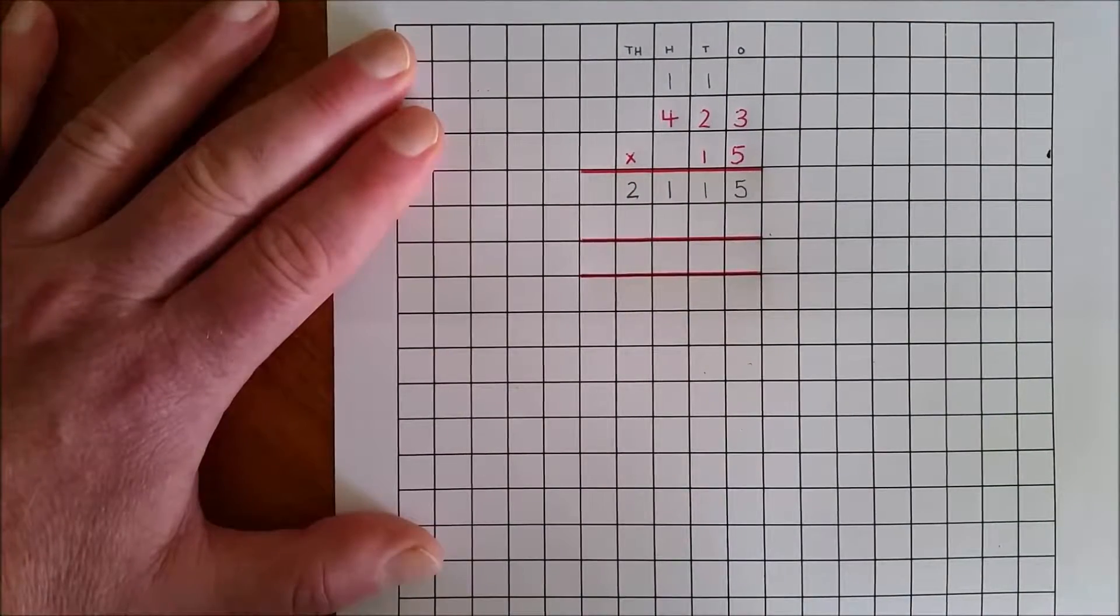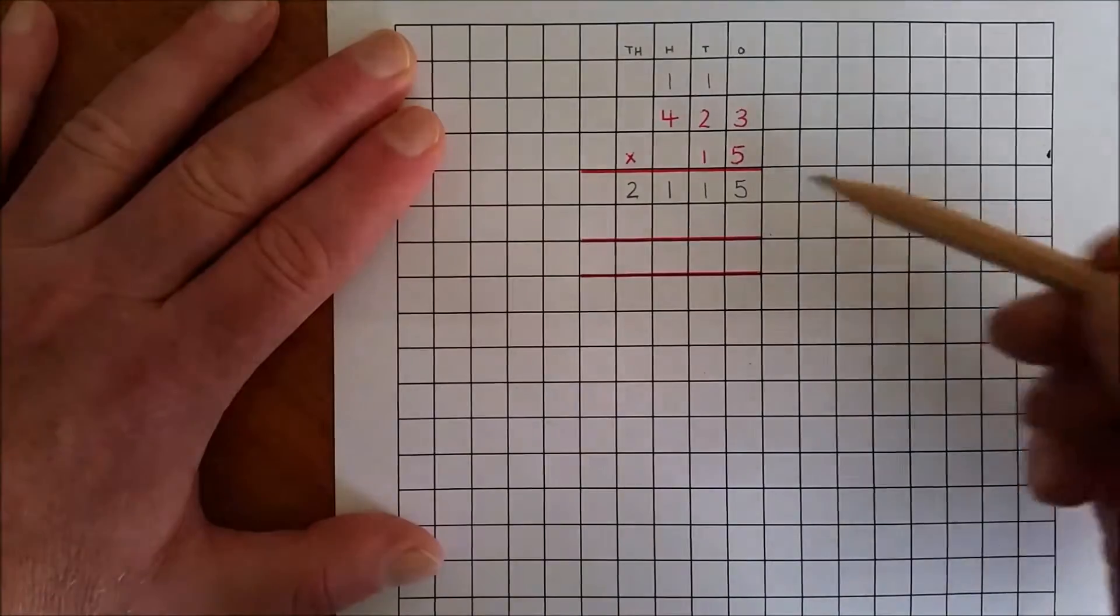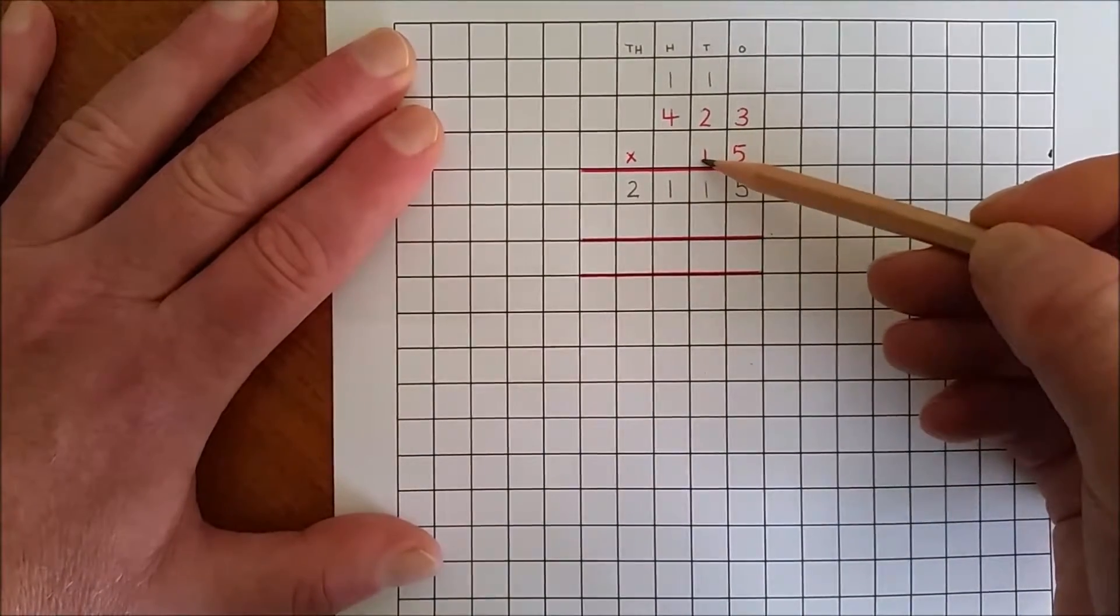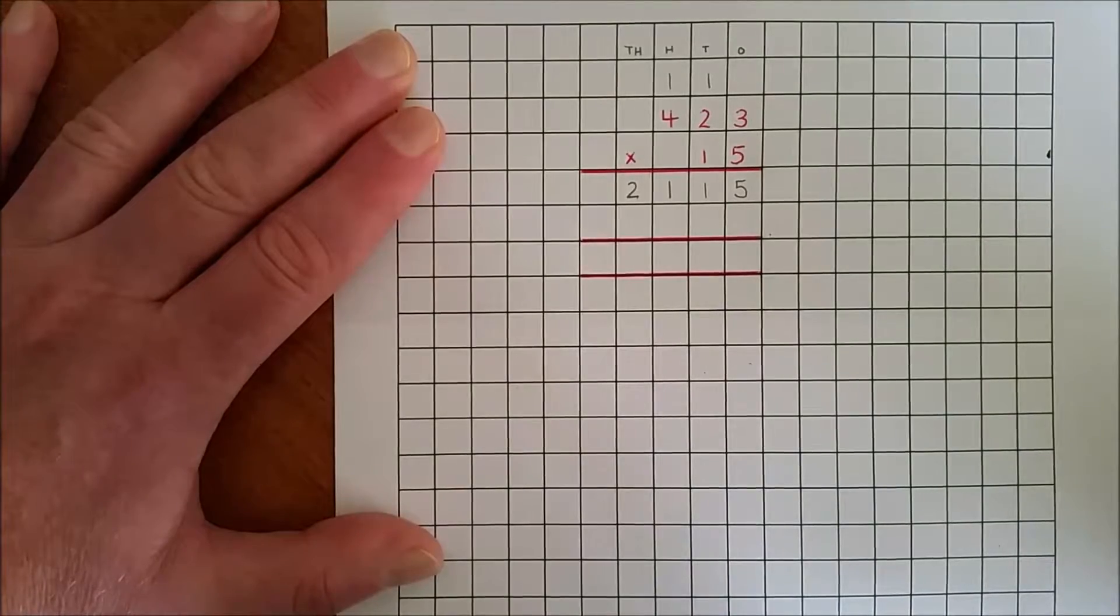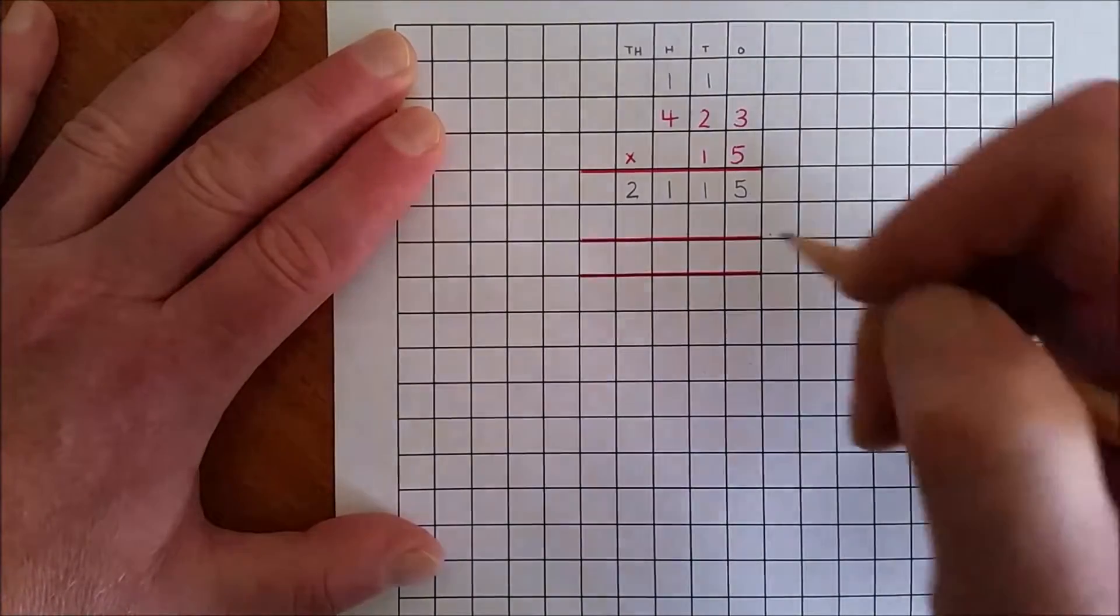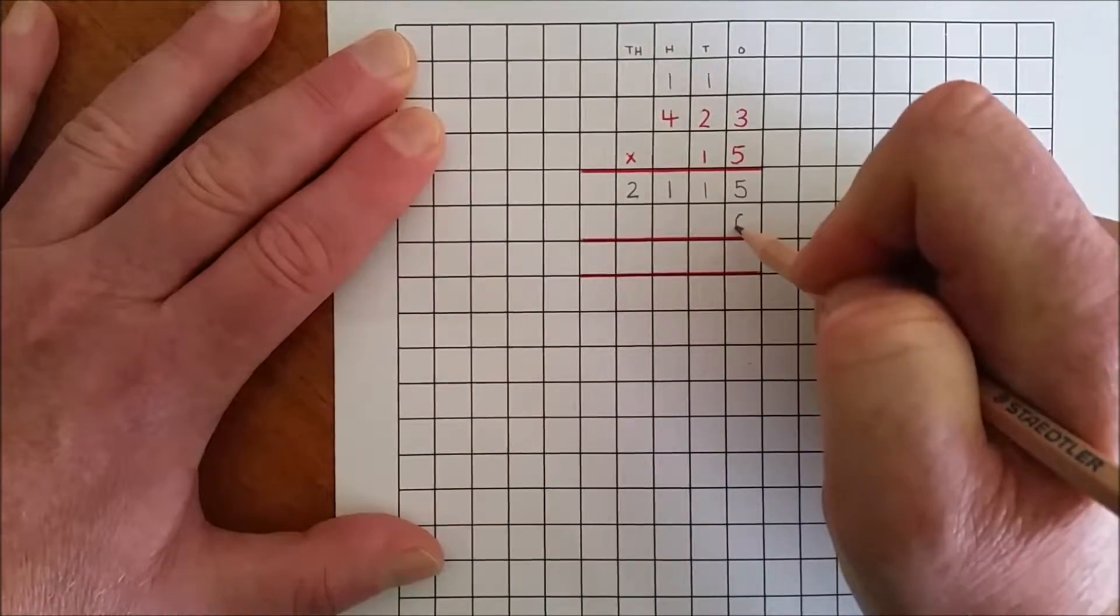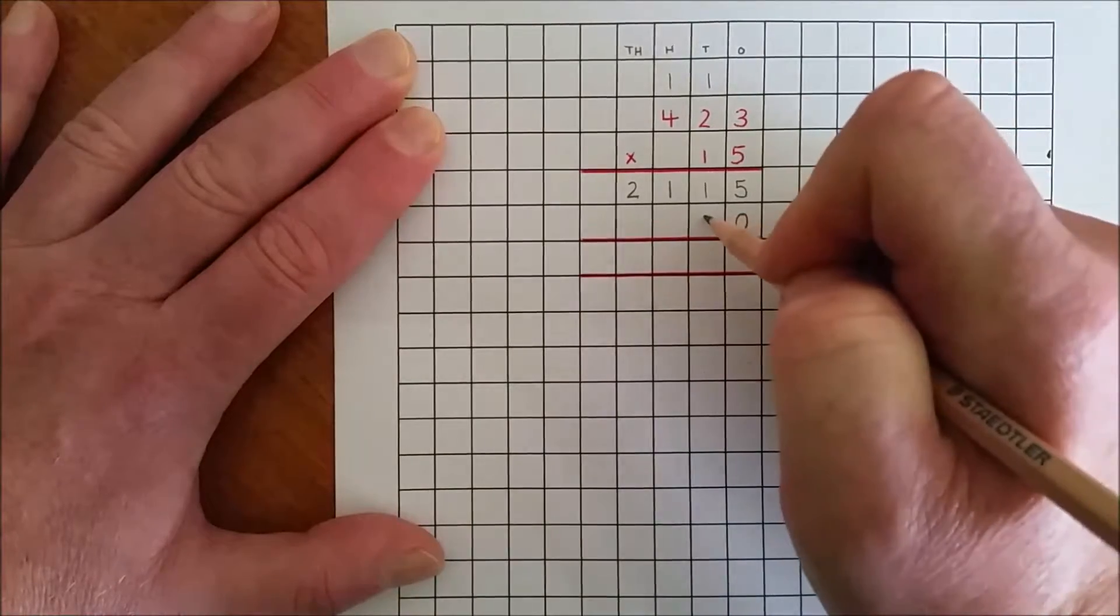Multiply by the tens. Ten by three ones is thirty ones. Rename thirty ones as zero ones and three tens.